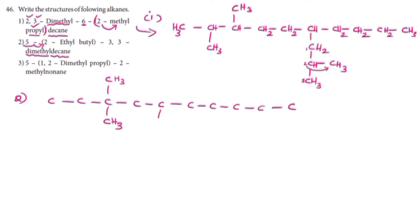Now we have to look at the fifth position — first position. It is the butyl group. Butyl has 1, 2, 3, and 4 carbons. This is the butyl.